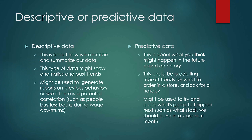Data can be descriptive or predictive. Descriptive data might show anomalies or past trends, can be used to generate reports, and is used basically to describe something — looking at previous behaviors to see if there are correlations or causations. Predictive data looks at what's happened in the past and uses that to decide what's going to happen in the future: making guesses about market trends, predicting what stock we should have next month, next year, or next holiday.